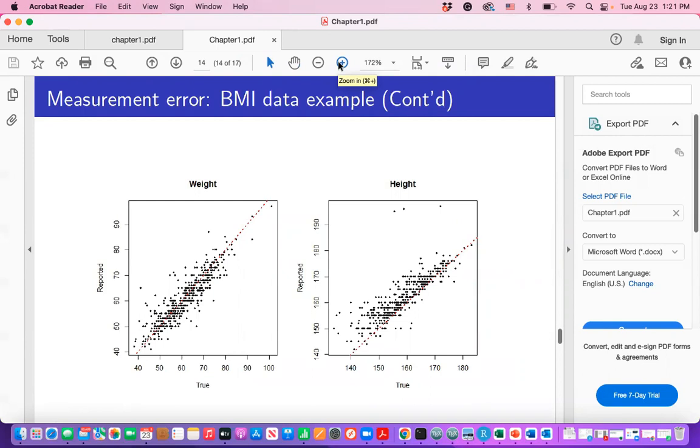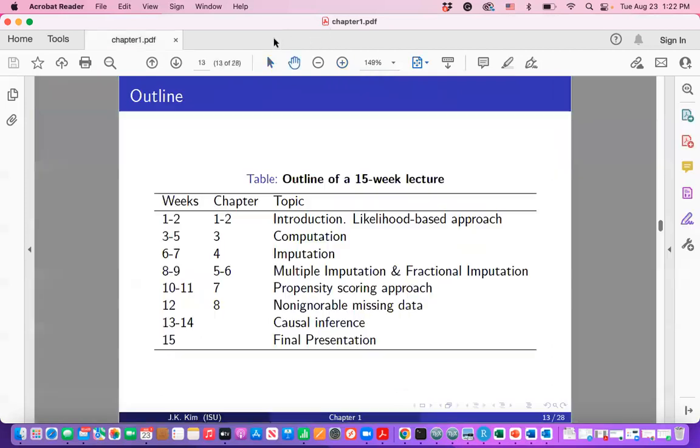This is the reported survey versus physical measurement with the 45 degree line. For weight, there's some variation - some people aren't honest and exaggerate. The height is more interesting because all points are above the line. Ask yourself - did you always report your height accurately? People tend to exaggerate their height.